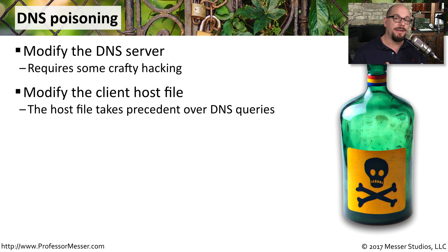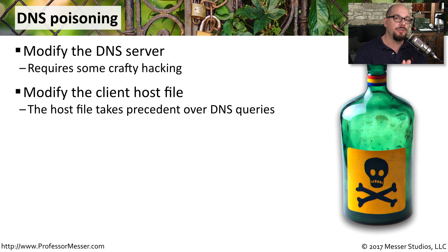One way to do this is to modify the files that are on the workstations. If you change the client's host file, for example, it won't even make the request to a DNS server. You can simply direct someone to an IP address based on what you put in the file on that person's machine.